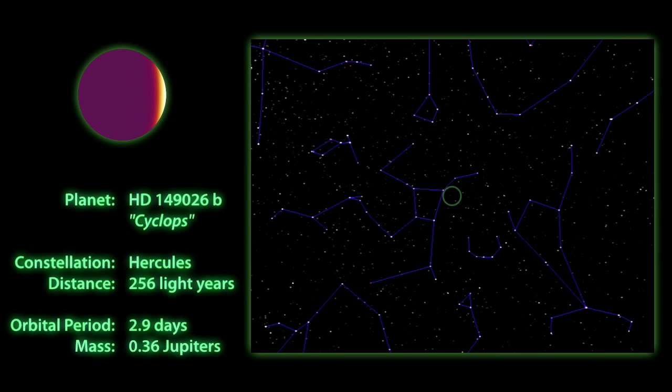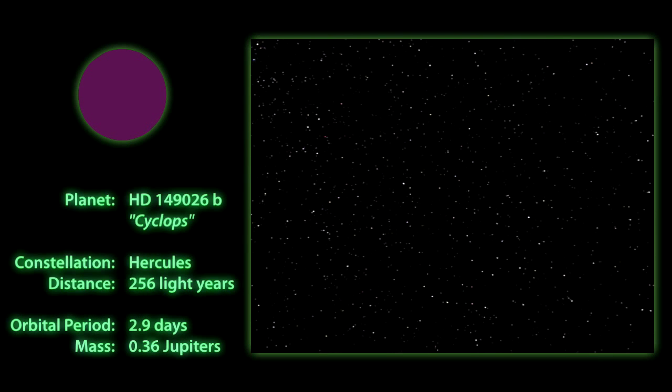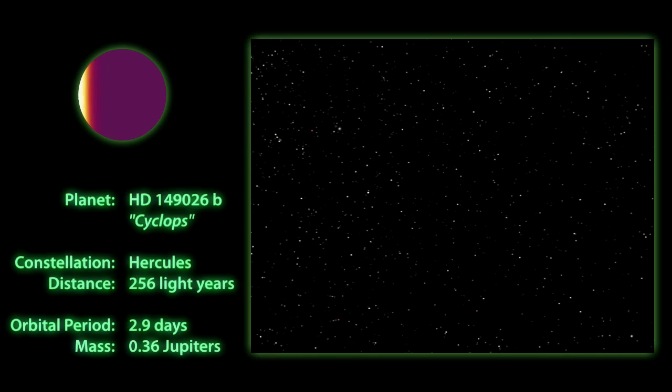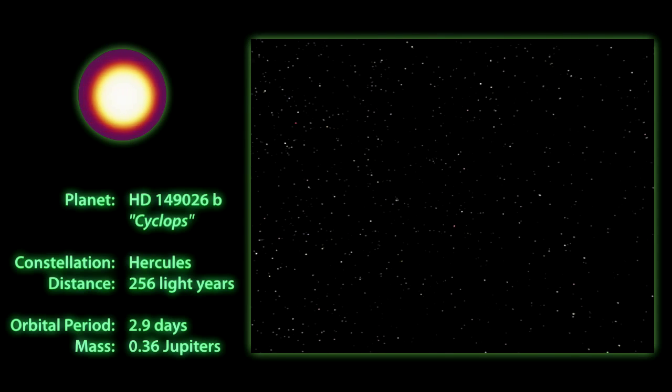Our first X-Planet, Cyclops, can be found in the constellation Hercules, orbiting a sun-like star that's about 250 light-years away.